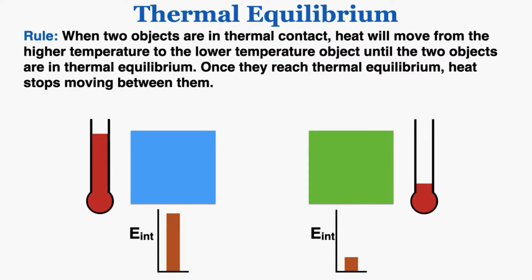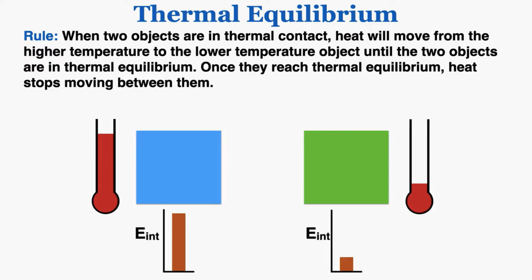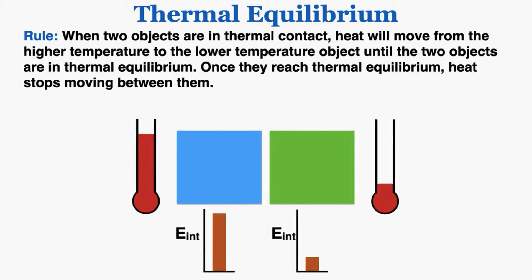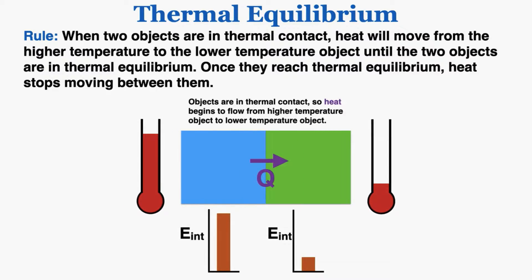Here I have two objects at different temperatures, as you can see by the thermometers I put next to each one, and I also have a graph of their internal energy below each object. I'm going to move these two objects into thermal contact and observe what this rule tells me about what will happen. When they enter into thermal contact, heat begins to move from the higher temperature to the lower temperature object, so it will move out of the blue object and into the green object.